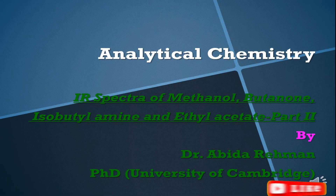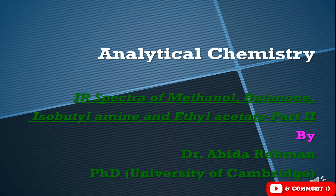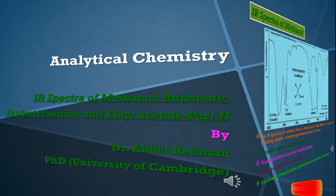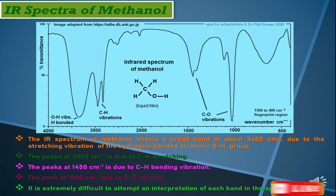Assalamu alaikum students, welcome to ChemQuest and to the series on interpretation of IR spectra. In the previous lecture I said there would be three lectures, but I found that I have actually made four lectures on the interpretation of IR spectra. In the present lecture we are going to study the IR spectra of methanol, butanone which is a ketone, isobutylamine, and ethyl acetate.